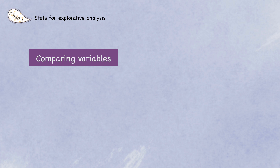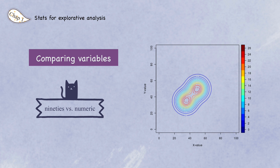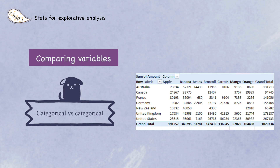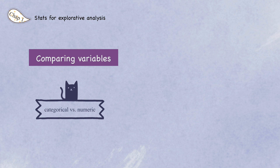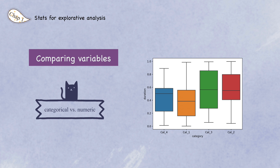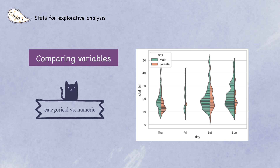When comparing two or more variables, different techniques apply depending on whether the variables are numeric or categorical. Scatter plots, heat maps, hexagonal binning, and contour plots are useful when comparing two numeric variables — they all give a visual representation of two-dimensional density. For two categorical variables, a contingency table is useful, such as a pivot table in Excel. When comparing a categorical variable with a numeric variable, box plots are a simple way to visually compare distributions grouped by category. However, box plots don't always show nuances in the distribution, so violin plots are sometimes more useful.